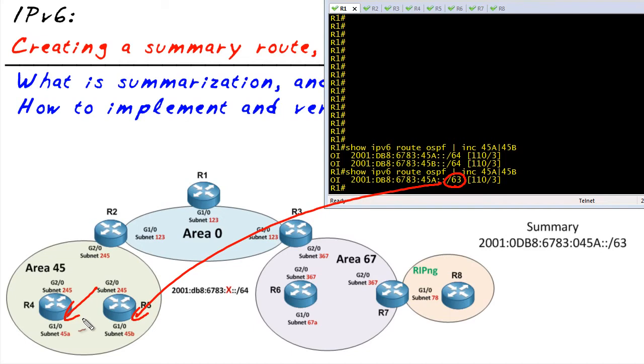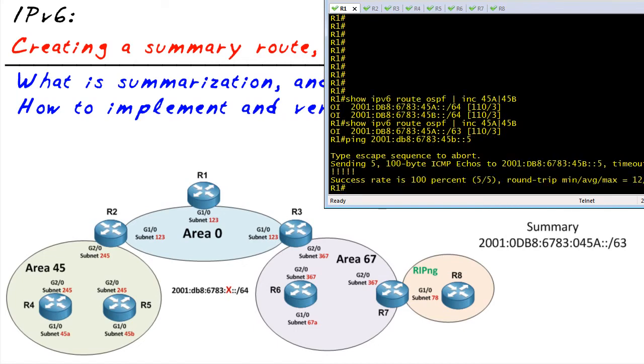We should still have connectivity to devices down in that network. We can verify that with a quick ping. So on R1, I happen to have—R5 has an IP address on that subnet, it's ::5. So let's go ahead and ping that: ping out to 2001:db8:6783:45b::5, and that works.